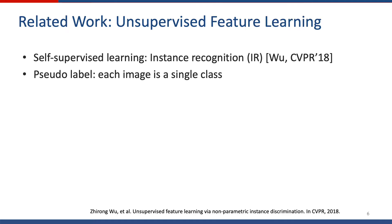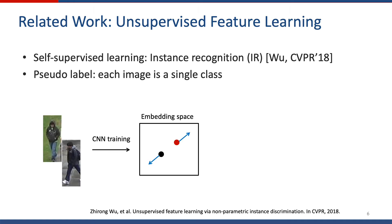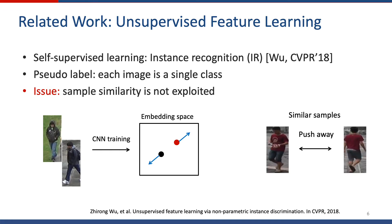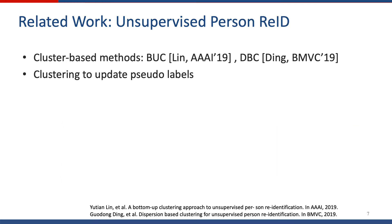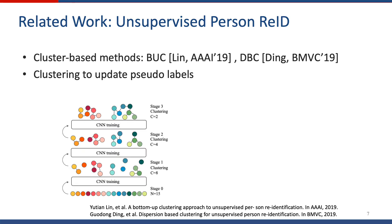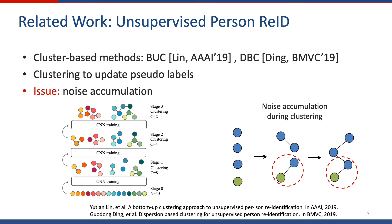We review some related work. First is unsupervised feature learning via instance recognition, which treats each image as a single class to train the network. The issue is that instance recognition does not explore sample similarity, and thus cannot reduce intra-class variance. Some clustering-based methods improve upon this by updating pseudo labels using clustering. The problem is that during clustering, there exists noise accumulation.